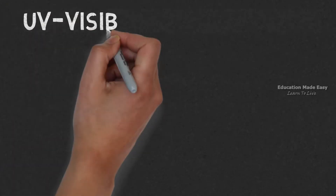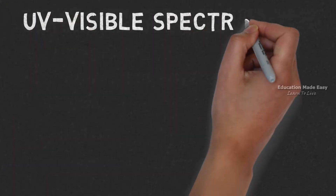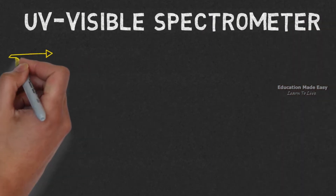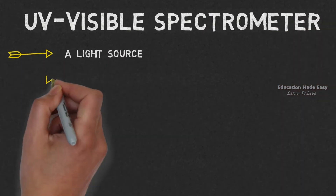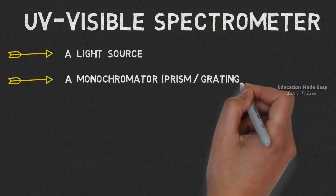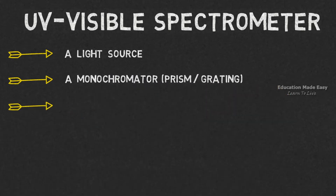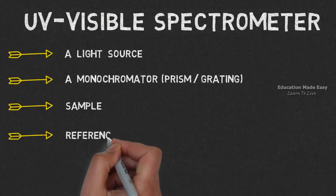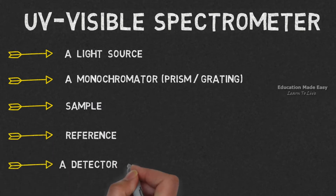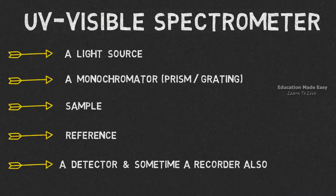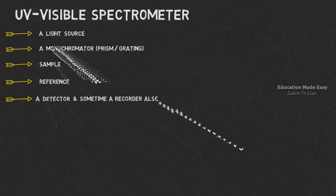Let us see what are the basic components of UV Visible Spectrometer. The basic components are a light source, a monochromator which is a prism or grating, a sample, a reference, and lastly a detector and sometimes a recorder also. These are the 5 basic components of a UV Visible Spectrometer.